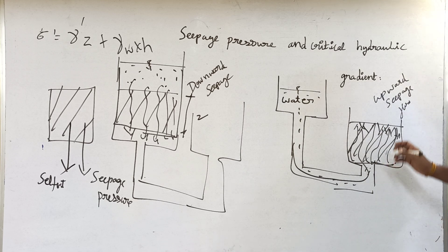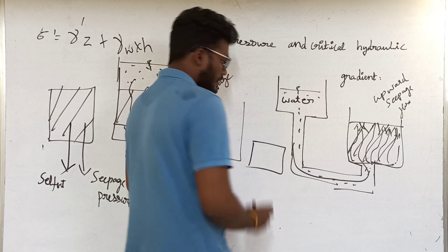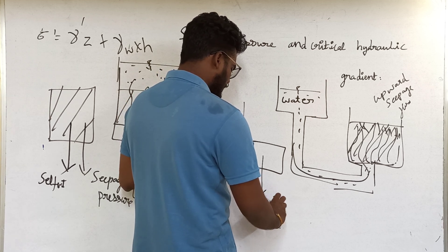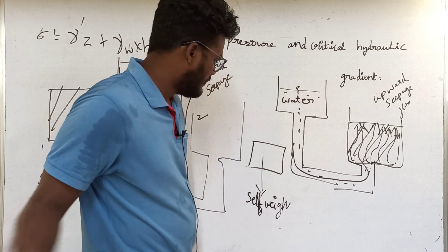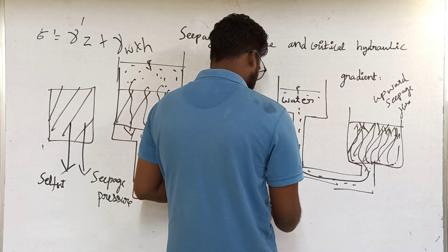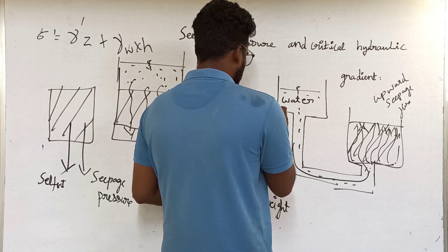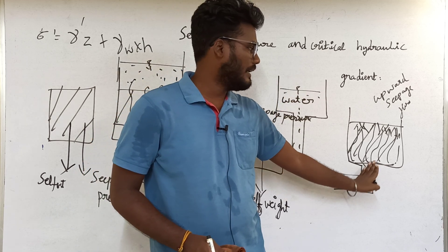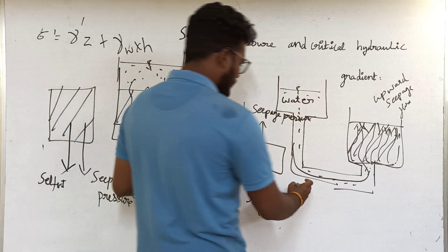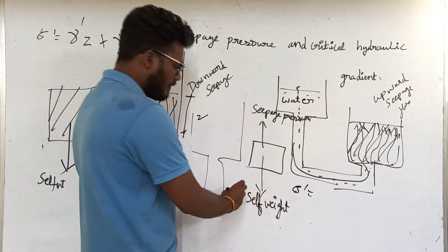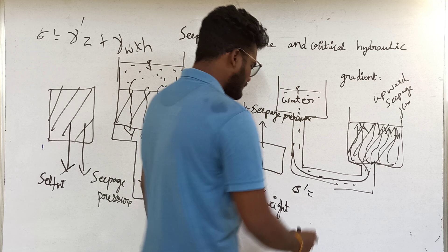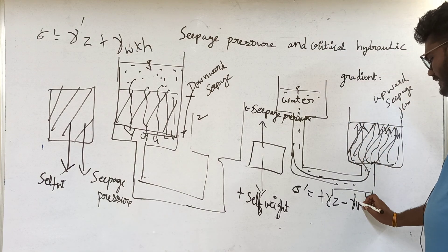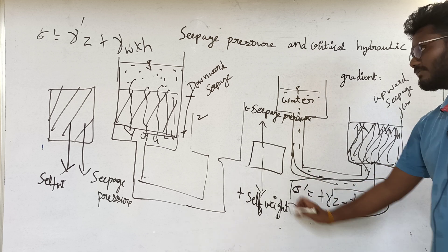Now consider the free body diagram for upward seepage. Here, the self-weight (submerged unit weight) acts in the downward direction, but seepage pressure acts in the upward direction — because water is pushing upward through the soil. So, the equation for upward seepage: sigma dash = gamma dash × Z − gamma_W × H.